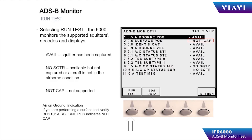A simple selection of the squitter type will display the data that was received. While running, you will see the IFR-6000 interrogate the aircraft, as indicated by the blue LED flashing.